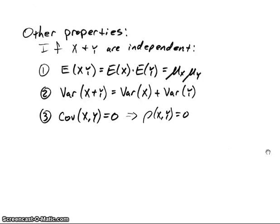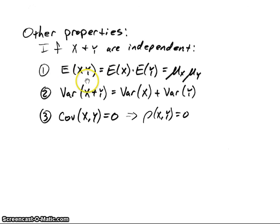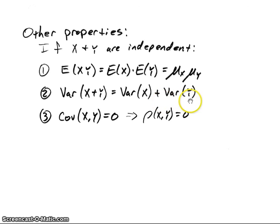There are some other properties that hold when two random variables are independent. One is that the expected value of X times Y will be equal to the expected value of X times the expected value of Y — that is, μ_X times μ_Y. I'm not going to prove these, but we'll state them as properties. Also, for the variance of the sum of two random variables, in general Var(X+Y) does not equal Var(X) plus Var(Y), but for independent random variables that equality does hold.